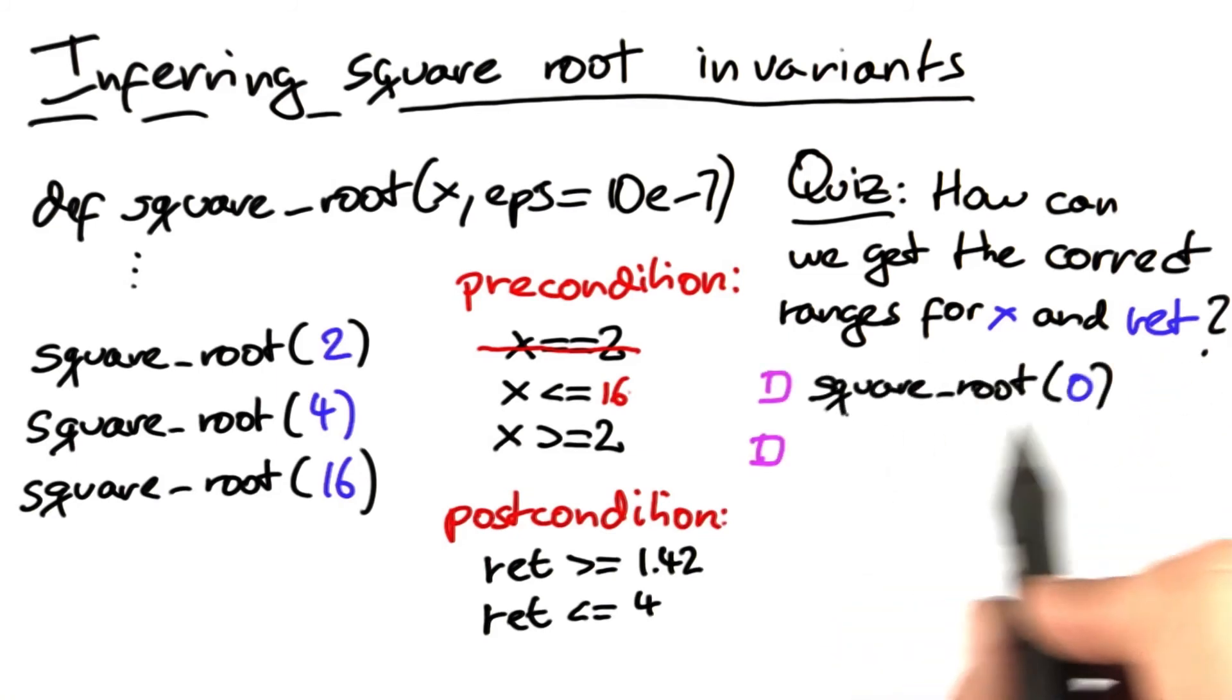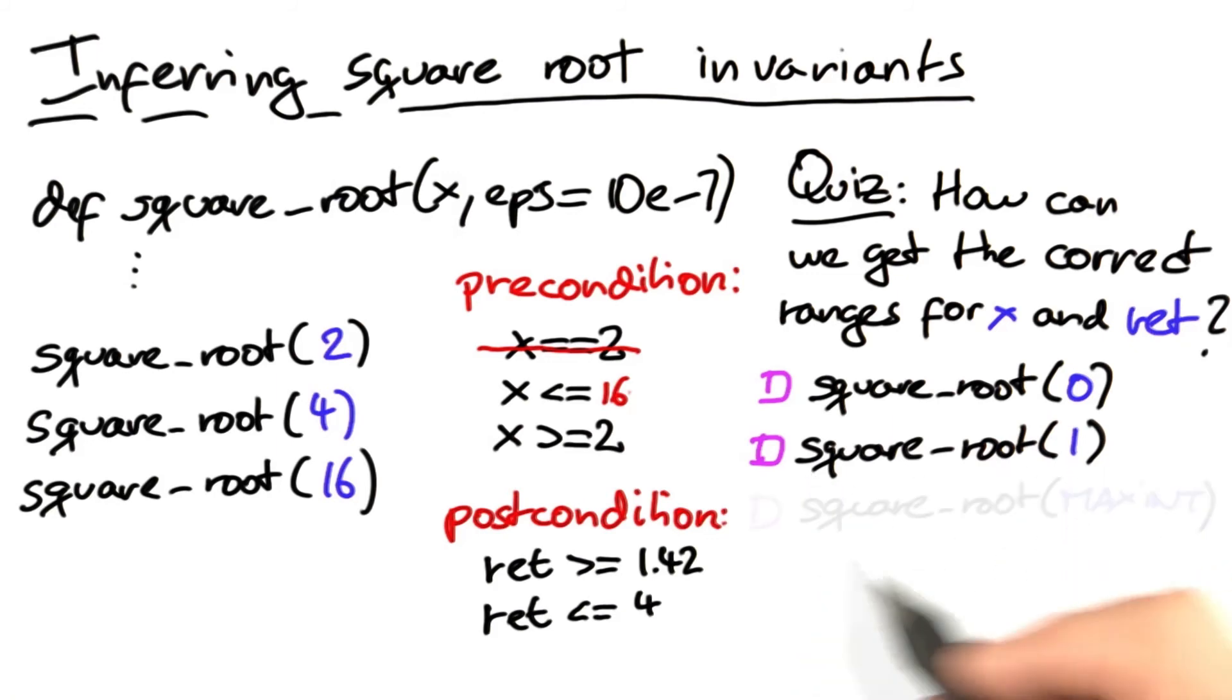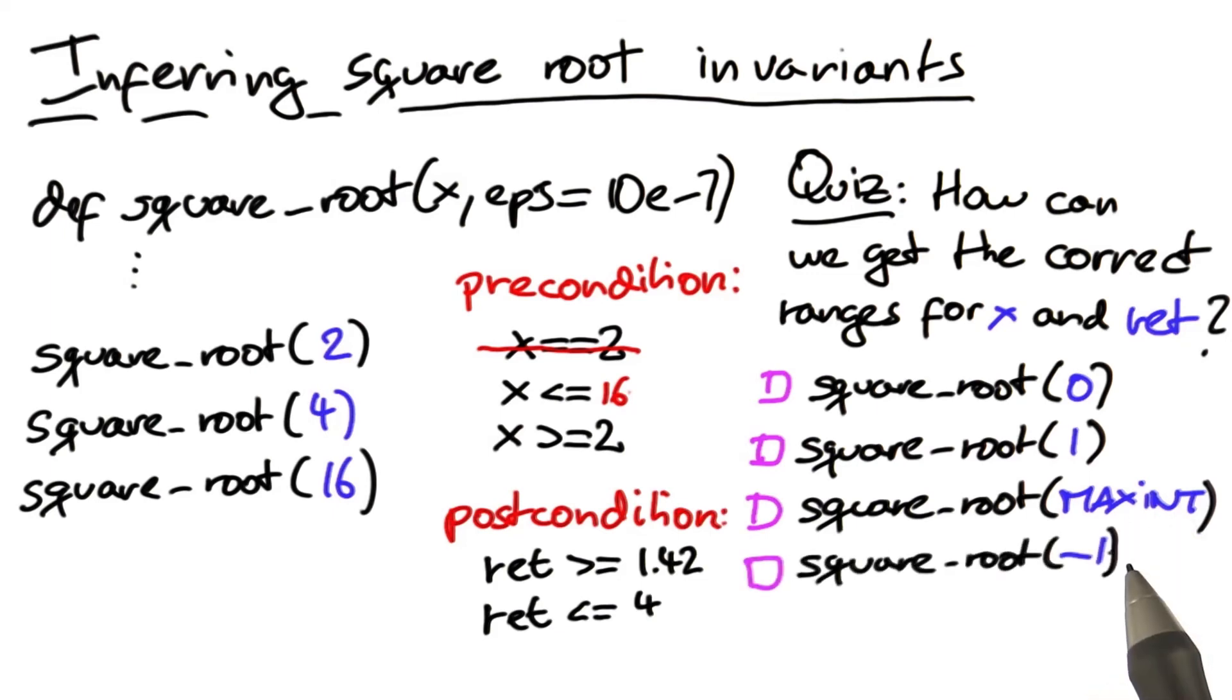By invoking square root with a value of 0. By invoking square root with a value of 1. By invoking square root with a value of maxint where maxint is the highest available integer. Or by invoking square root with a negative value. You need multiple invocations. Check those which you need to get the correct ranges.